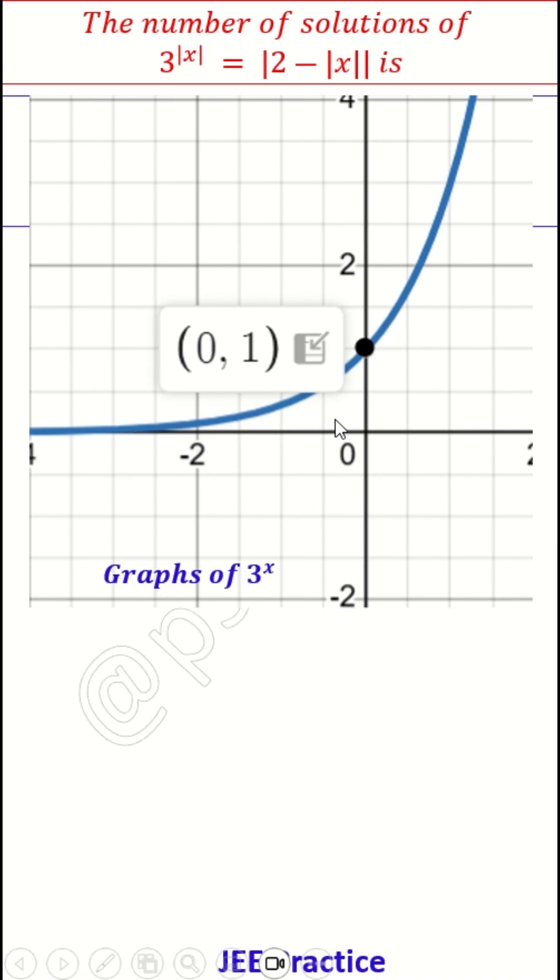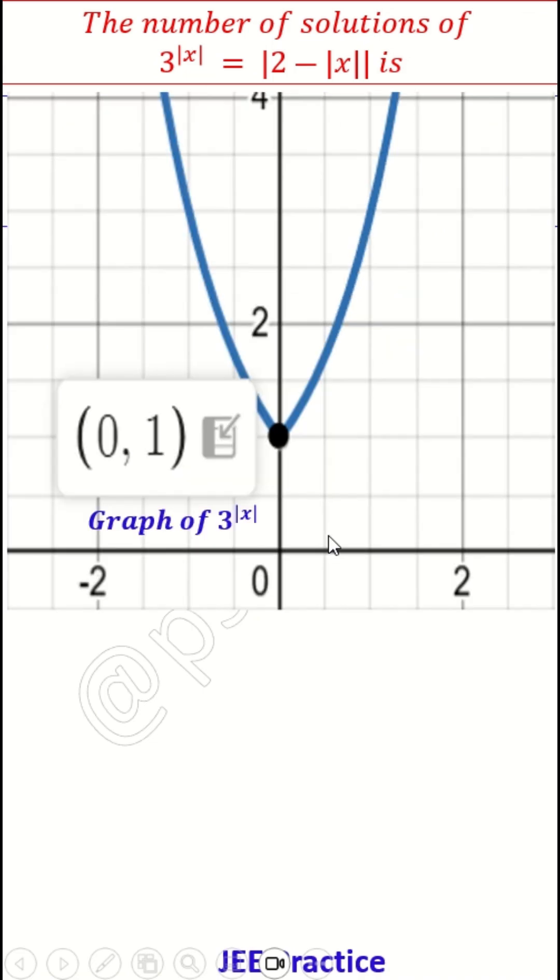What is 3 to the power of absolute x? This negative part will not be there. There is no negative x value. Negative x value also will behave just like positive x value. So there will be a graph here like this. This is what is 3 to the power of absolute x.